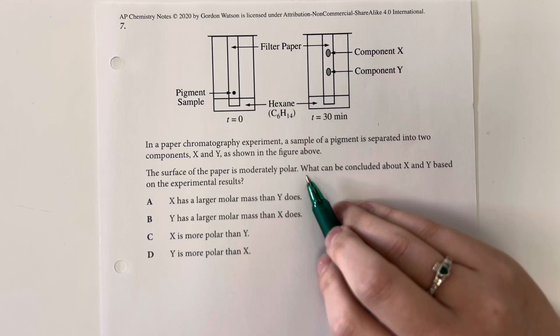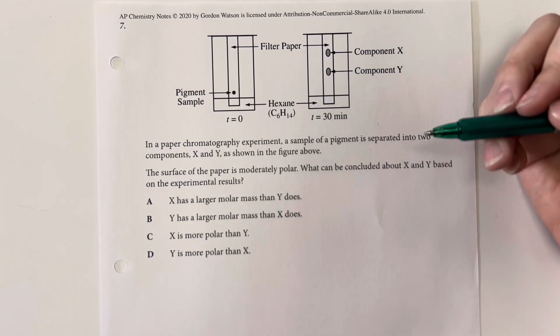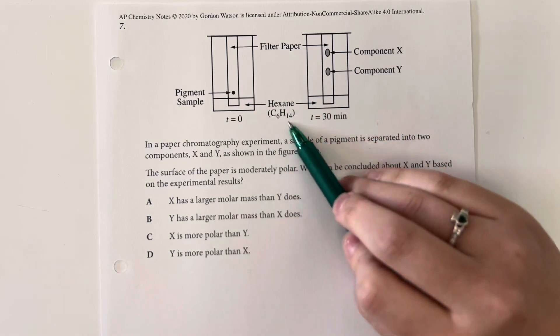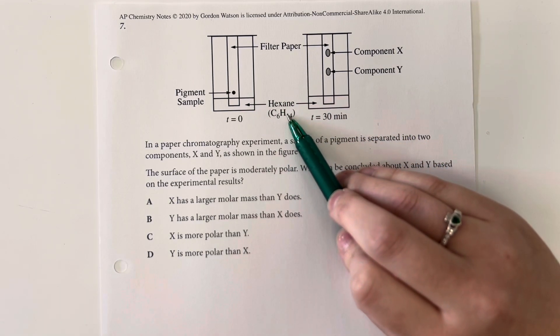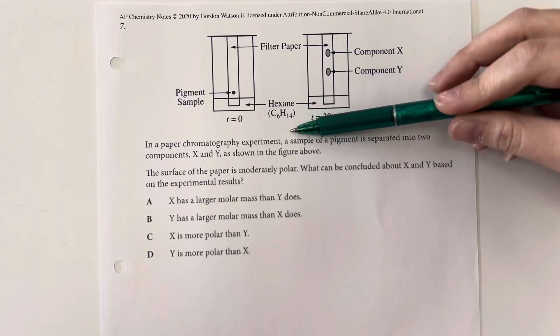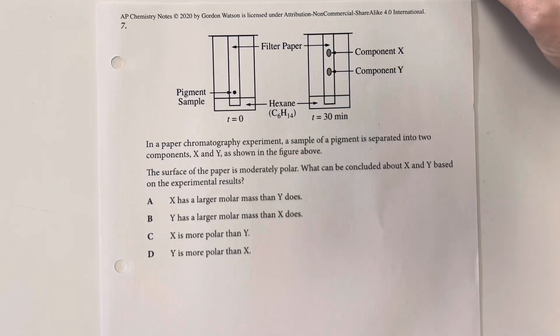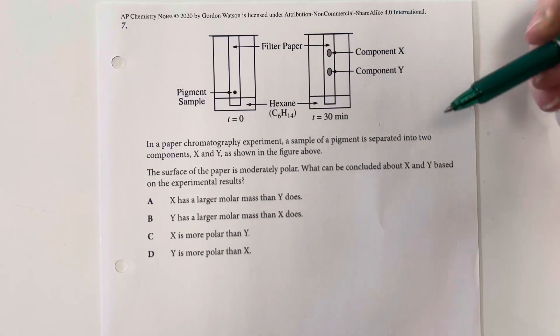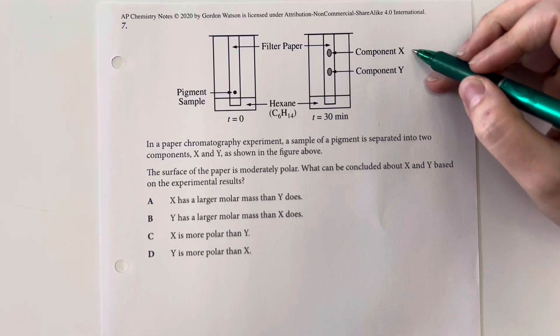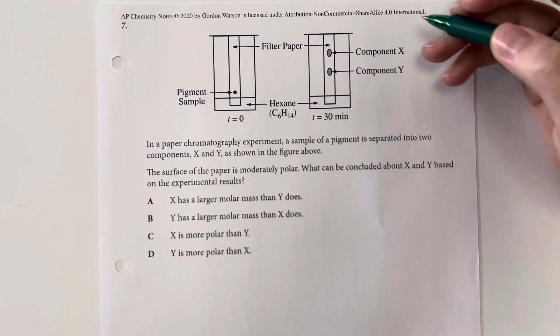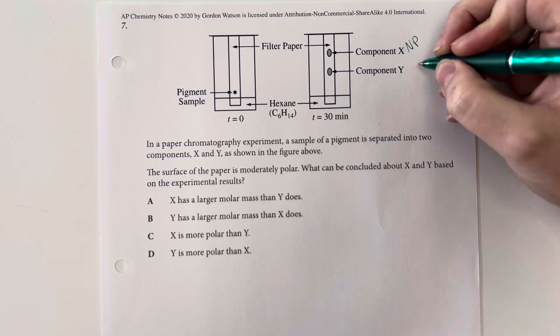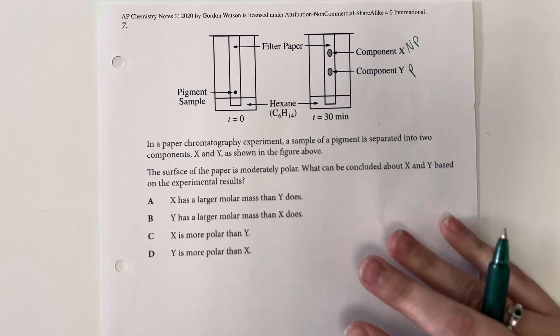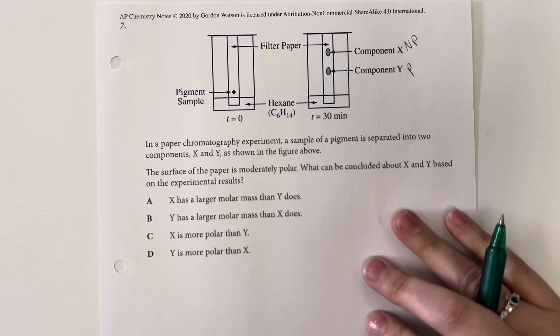So the paper is going to be moderately polar. And then our solvent is hexane, which is very much nonpolar. So whatever is going to be chasing up with the hexane is going to be the less polar compound. So compound X is going to be much more nonpolar versus compound Y. So I'm going to look for something that reflects that.